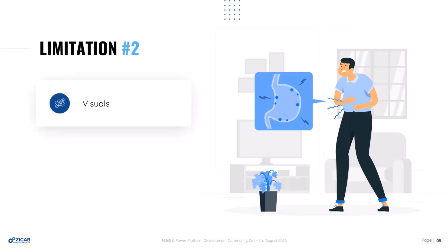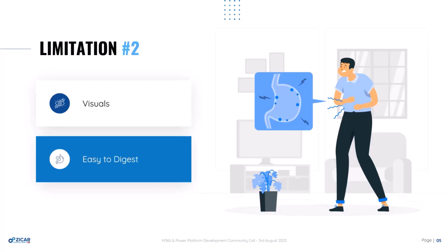Then there was the visuals. Every time I'm with a customer, we have a project plan and the Microsoft maturity model to see where we are in the journey and where we want to be. But it's not enough to just have visuals — you need easy-to-digest visuals. With the SOPs I had, I could showcase the project management side, but it wasn't easy to communicate across stakeholders, so I needed to address that.